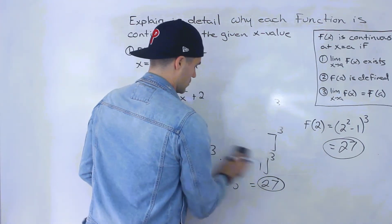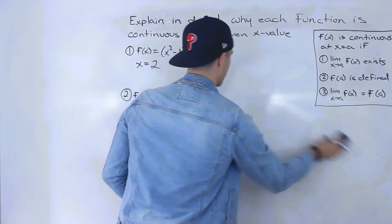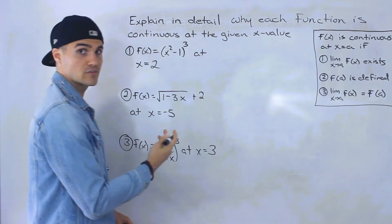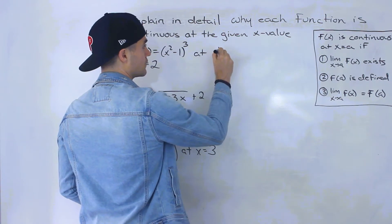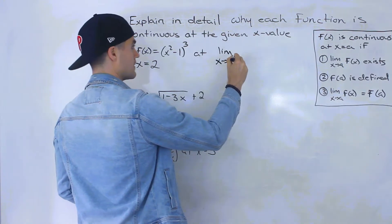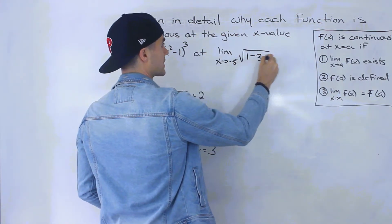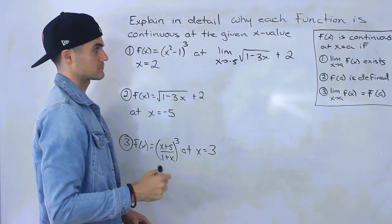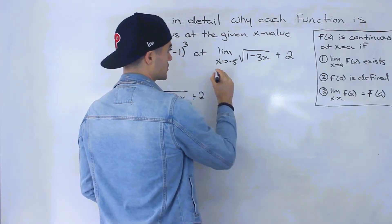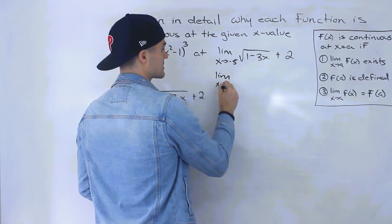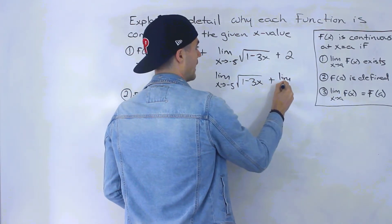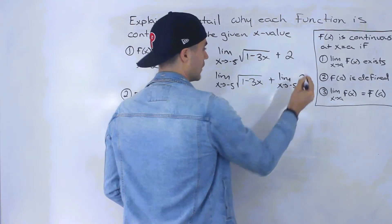Number two: f(x) = √(1 - 3x) + 2 at x = -5. The first condition is to show that the limit as x approaches -5 of √(1 - 3x) + 2 exists. Using properties of limits, we can split the addition: limit as x→-5 of √(1 - 3x) plus the limit as x→-5 of 2. Then we can distribute the limit inside the square root.